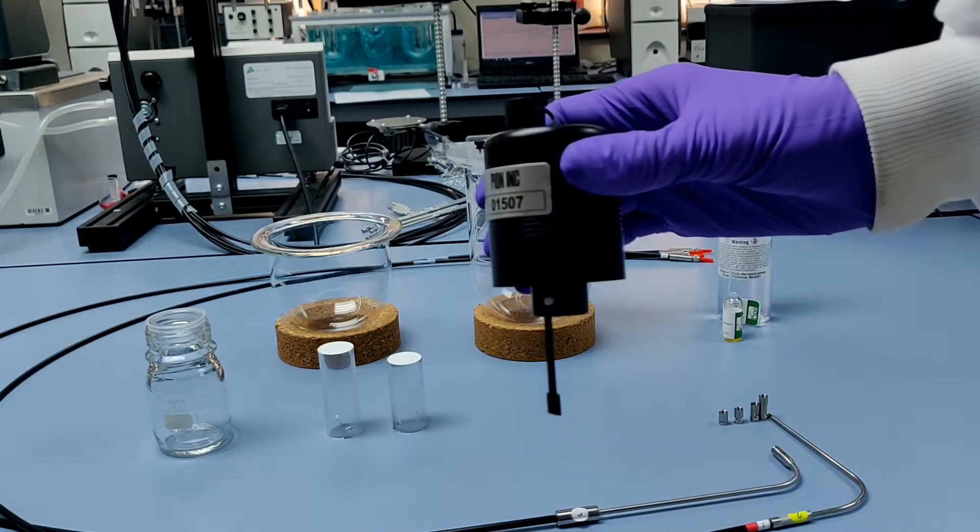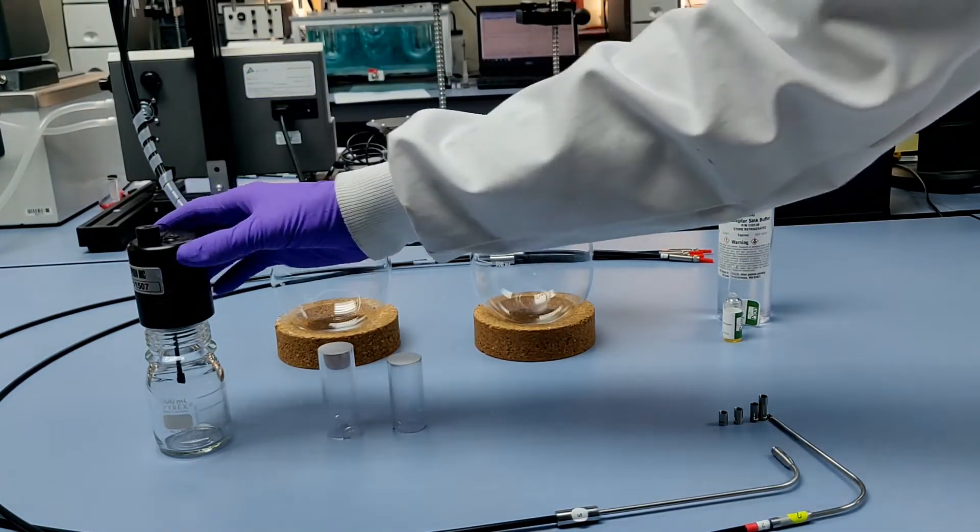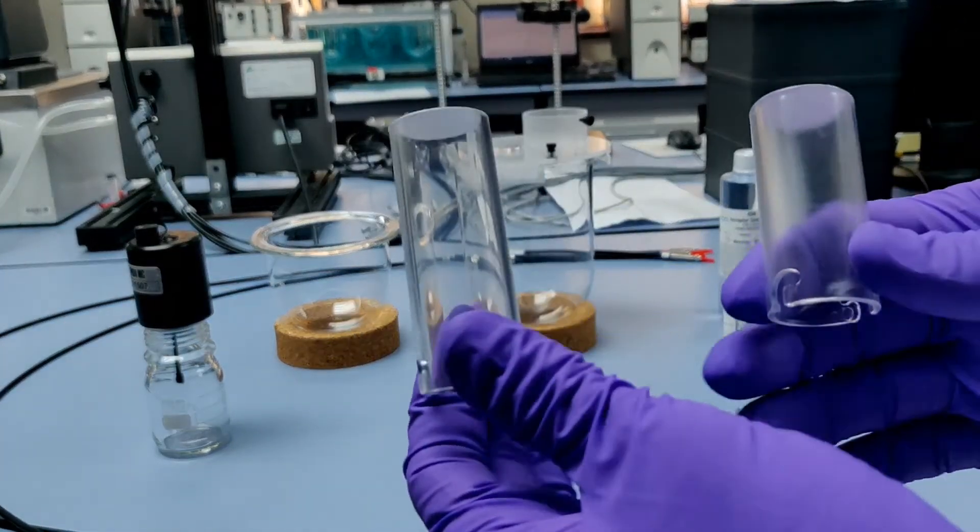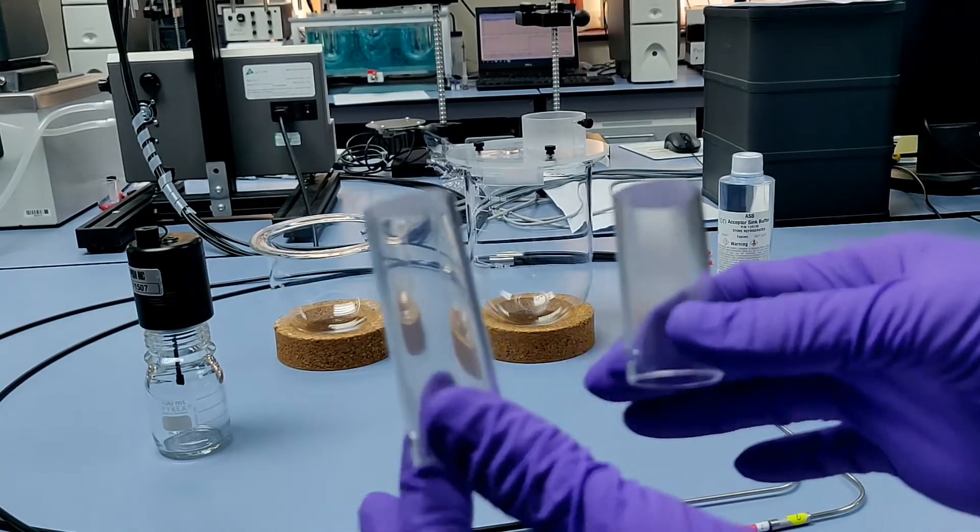The stirrer head employs an overhead stirrer and is used in conjunction with one of two sizes of acceptor chamber. The extended length chamber is for use with the BioFlux, and the standard length chamber is for use with the MacroFlux.